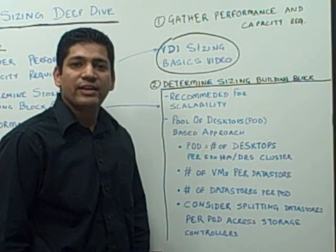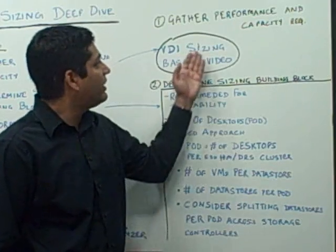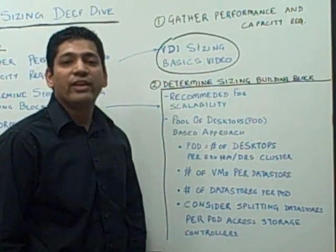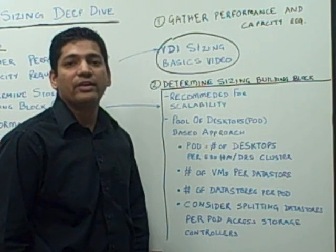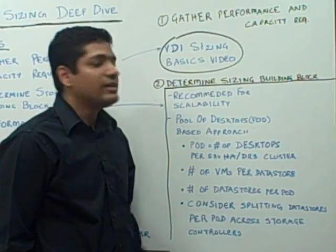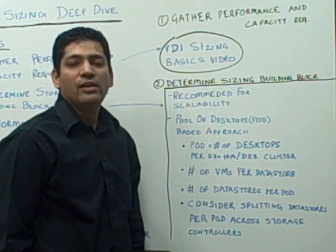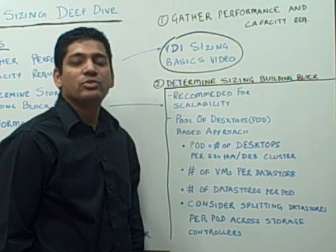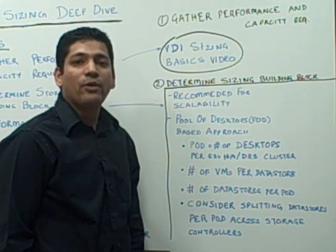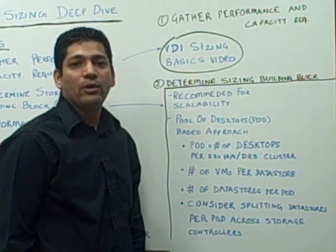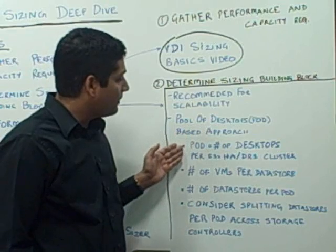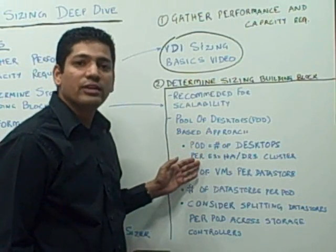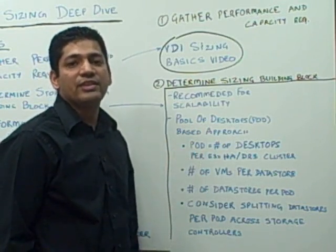As a first step in sizing VDI, getting an understanding of the customer performance and capacity requirements is very important. There is a VDI sizing basics video where I cover the different ways performance and capacity requirements can be obtained from the customer. The next step is determining the storage sizing building block. As the customer environment scales to tens of thousands of VMs, it becomes very important to define a sizing building block up front. We use a pod-based approach, where a pod is defined as the number of desktops that can be hosted in each ESX HA/DRS cluster.